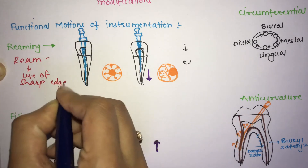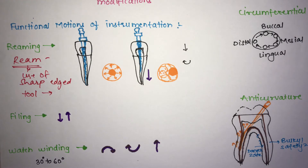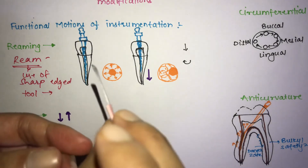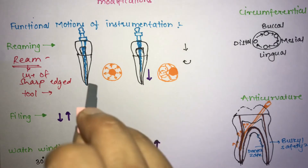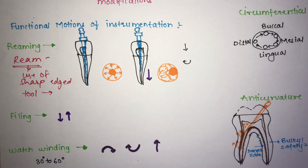In endodontics, rimming is the clockwise rotation of an instrument, typically done with rimmers though K-files can also be used. You simply move the instrument in the clockwise direction inside the canal. The important point is that the instrument should be controlled from insertion to generate a cutting effect.